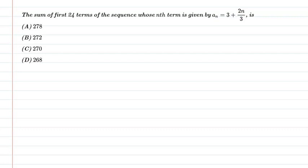Hello students, first of all let us understand the question. The question is: the sum of first 24 terms of the sequence whose nth term is given by an = 3 + 2n/3. Let's start.